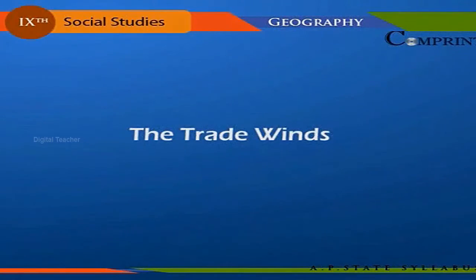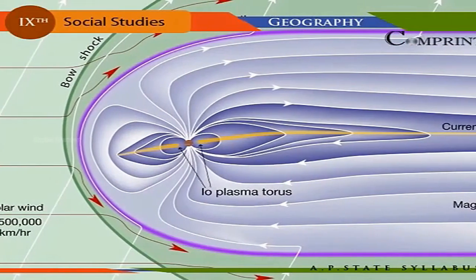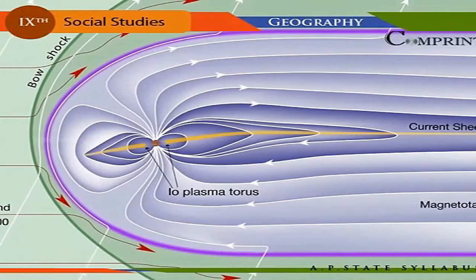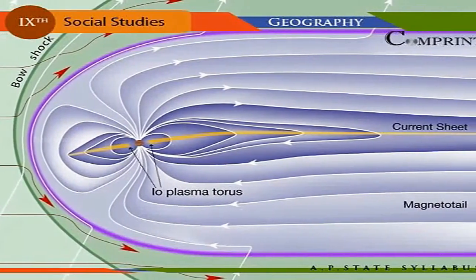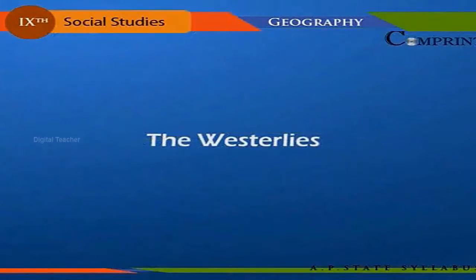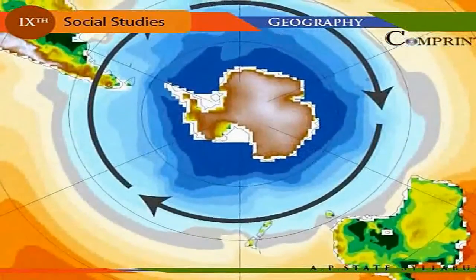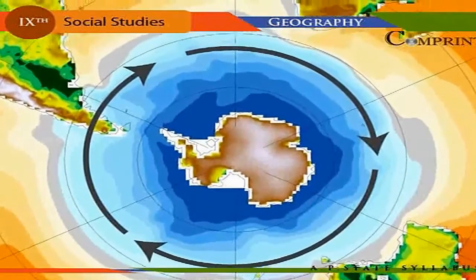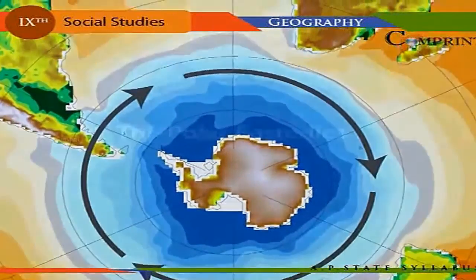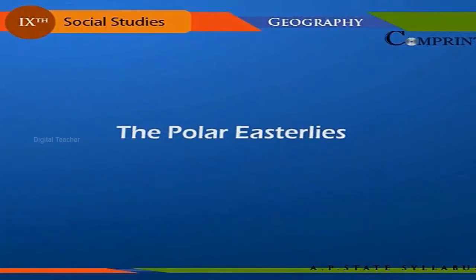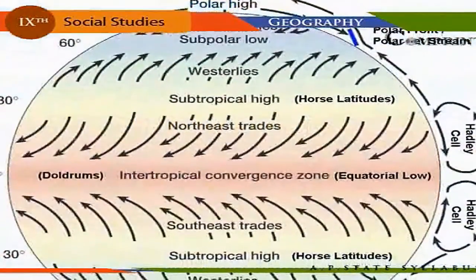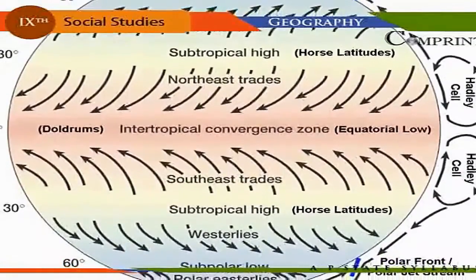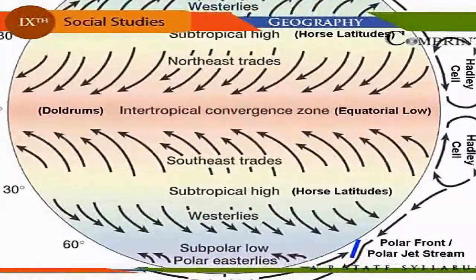The trade winds: winds blowing from the subtropical high pressure belts to the equatorial low pressure belts are called trade winds. The westerlies: winds blowing from the subtropical high pressure belts to the subpolar low pressure belts are called the westerlies. The polar easterlies: winds blowing from the polar high pressure belts to the subpolar low pressure belts are called the polar easterlies.